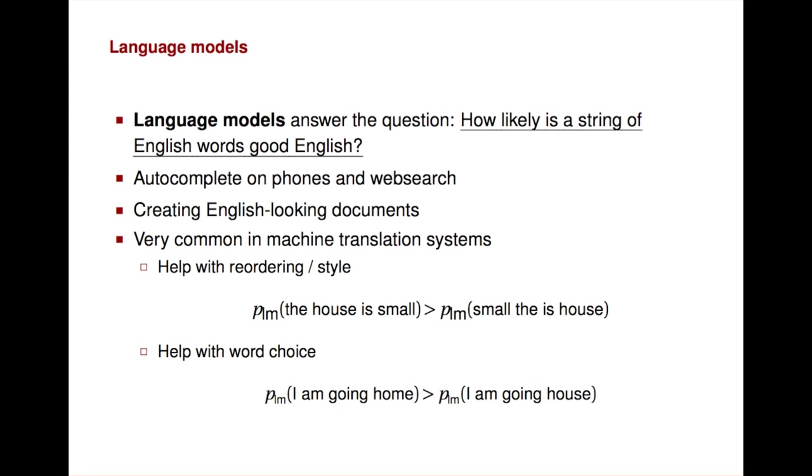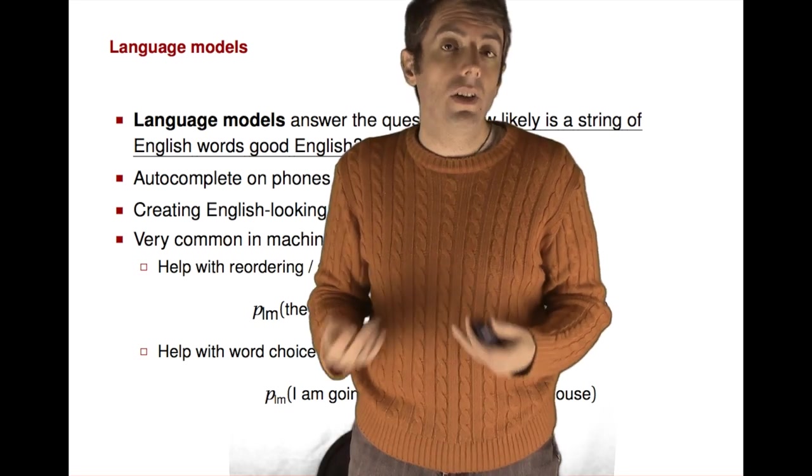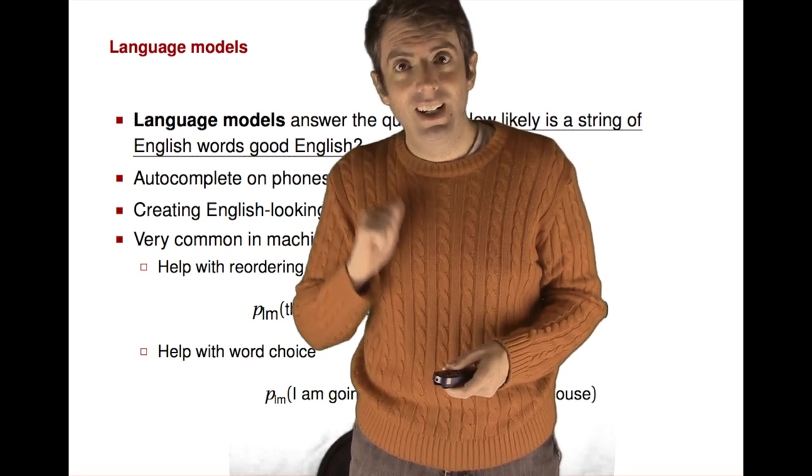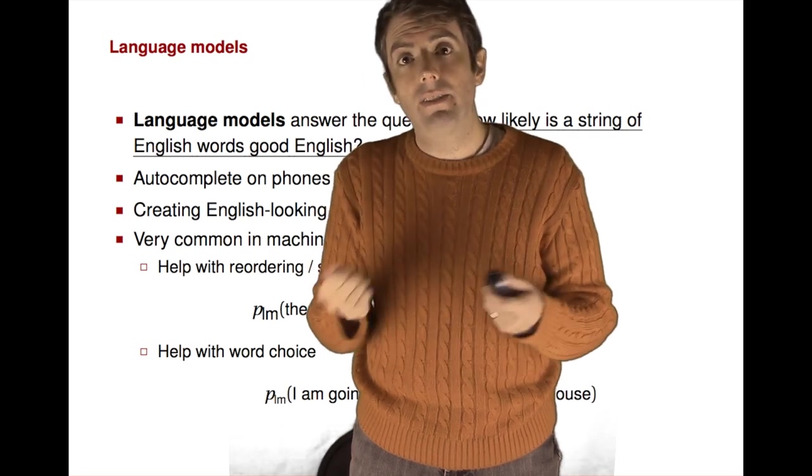This is important for applications like predicting the next word that you're going to say on your phone. It's also useful for things like machine translation. Machine translation may give you multiple outputs as possible translations for a phrase, and you might prefer to say I'm going home rather than I'm going house. It can also help you with word order.